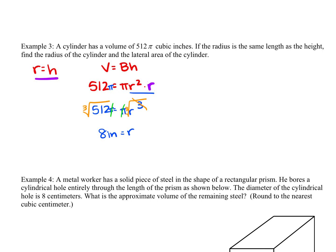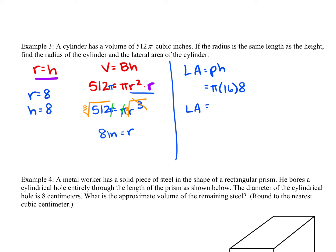If our radius is 8, that makes the height 8 as well. For lateral area, our formula is perimeter of the base times the height — pi times diameter. If our radius is 8, our diameter is 16, and our height is also 8. 16 times 8 gives us a lateral area of 128π inches squared.